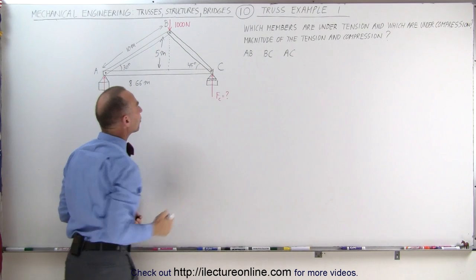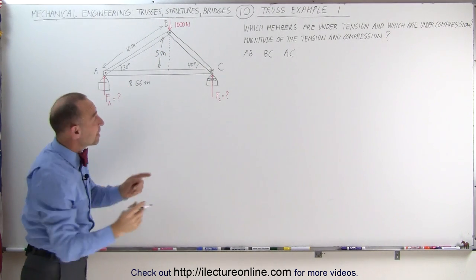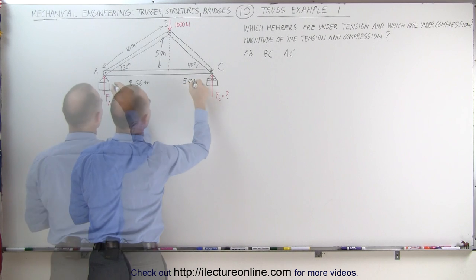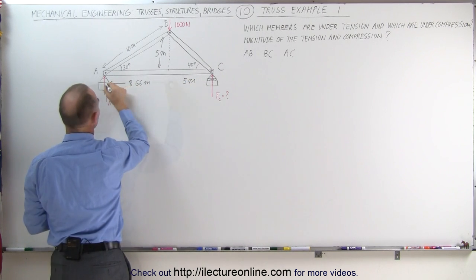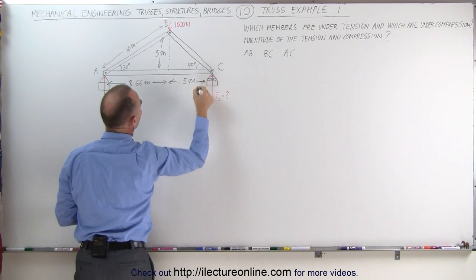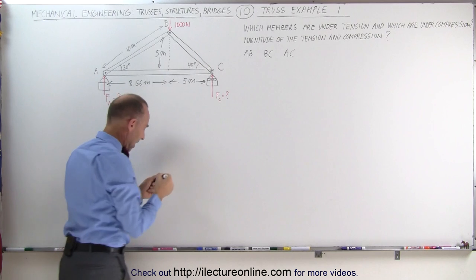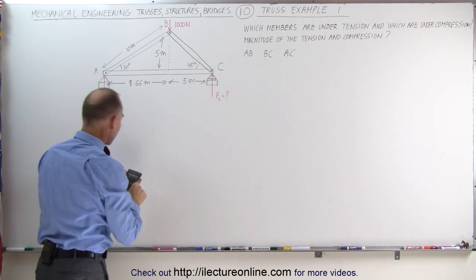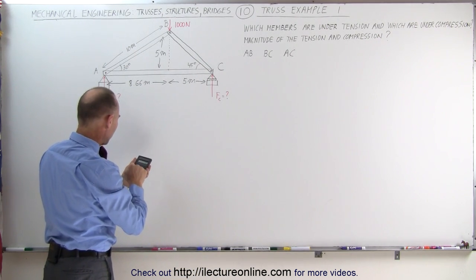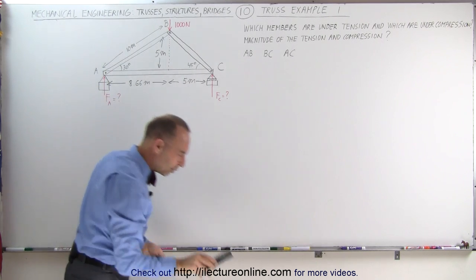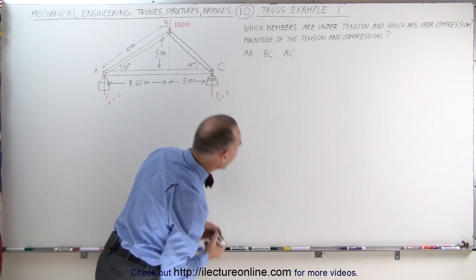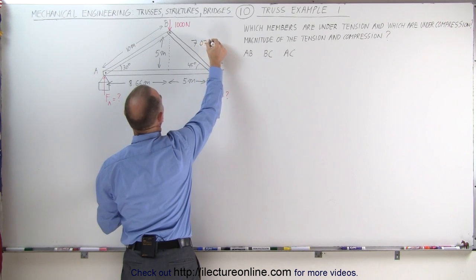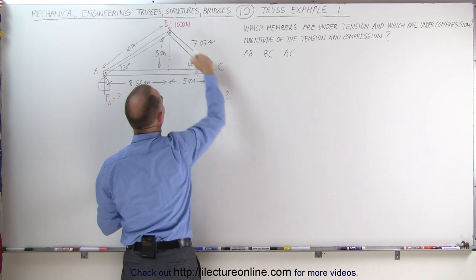Since we have a 45-degree angle there, that means this section is also 5 meters. That makes this member the square root of 25 plus 25, which is the square root of 50, or 7.07 meters. So we'll write 7.07 meters for the length of that member.